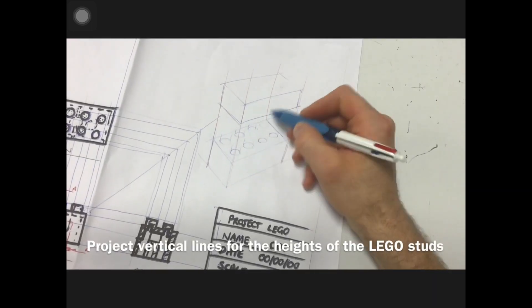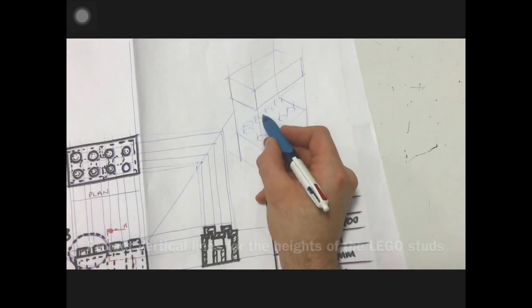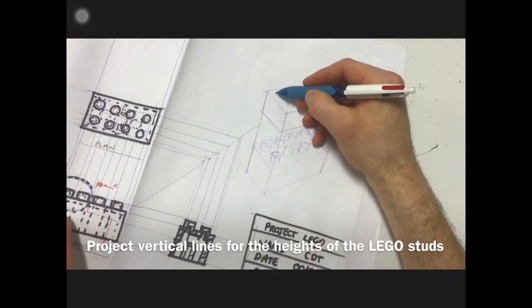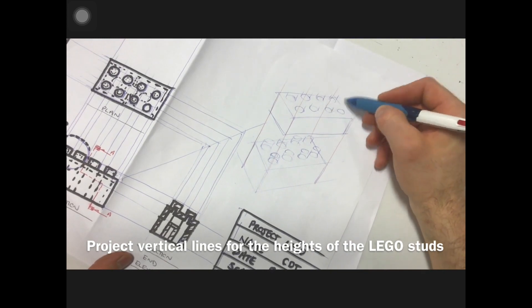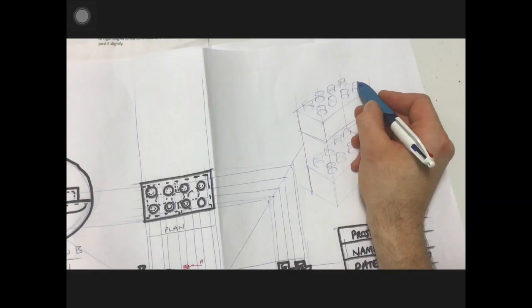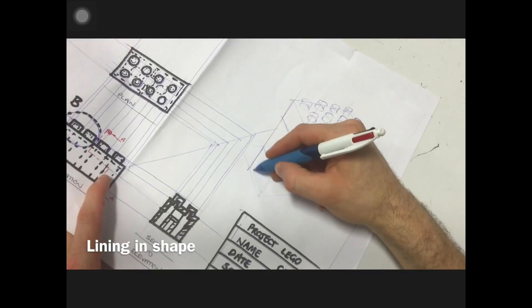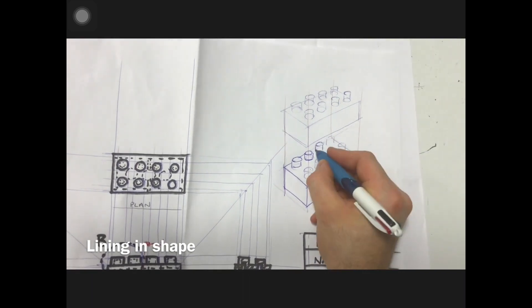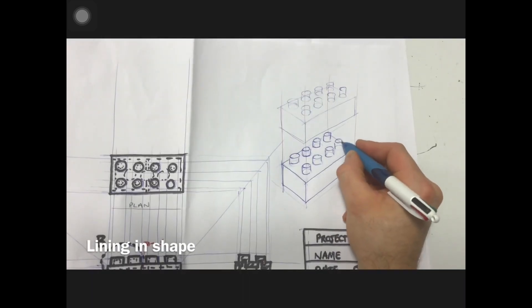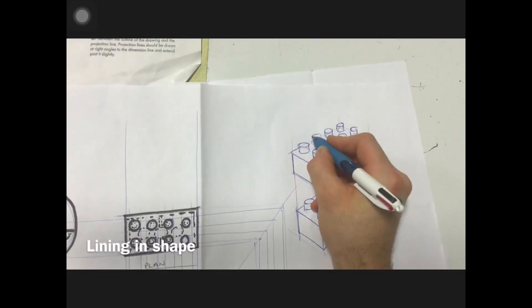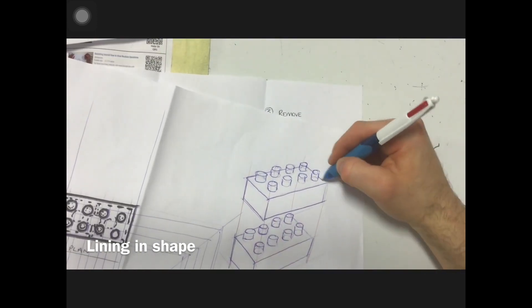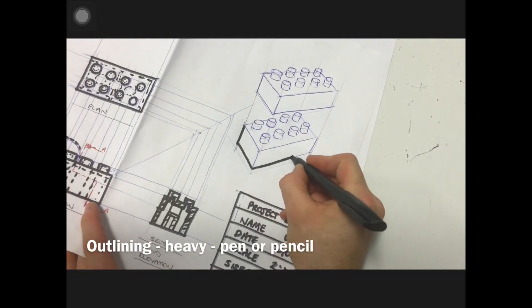Projecting up lines for each of the heights of these cylinders. Now that the shape's in place, I can begin to outline this. A wee bit a wee touch rush there, but what I'll do is I'll tidy up a little bit more with my black pen to neaten up pages. Black outline can be done with black pen, could be done with a black pencil.